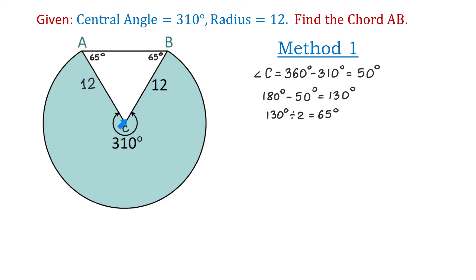Now from point C we will draw a perpendicular to AB and let this point be point D. And because the triangle ACB is an isosceles triangle, then this perpendicular will split the side AB into two equal parts. So AD will be equal to BD.